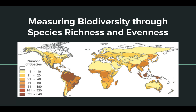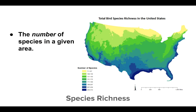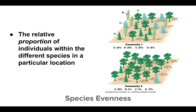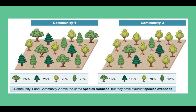What we're looking at here is the richness and the evenness of an area, and it's important not to misinterpret either of these. Species richness is simply the number of species in a given area. Looking at the map, we can see the number of bird species, and we notice that coastal and southern areas of the United States generally have greater species richness of birds. Species evenness, on the other hand, is the proportion of individuals within the different species in a given area. Knowing the species richness or evenness of an ecosystem gives environmental scientists a baseline to determine how much an ecosystem has changed. Species richness and species evenness are two different measures of diversity.